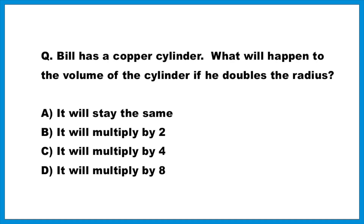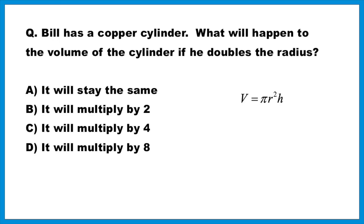Here's another variation of a strategy we've touched on before. Bill has a copper cylinder. What will happen to the volume of the cylinder if he doubles the radius? In a previous video, we talked about how you can pick your own numbers to make abstract ideas more concrete. I'll give you that hint before we start. I'll also give you the formula for volume — they give it to you on the reference table anyway for the SAT. Volume is π r² times the height. Pick a number for the radius, press pause, and watch what happens.